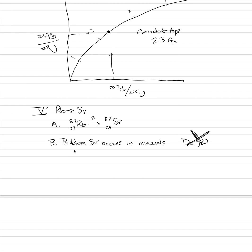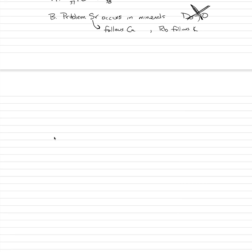Strontium follows calcium geochemically, so minerals with lots of calcium — feldspars, micas, amphiboles — already contain strontium. Similarly, rubidium follows potassium, which also occurs in many minerals. This means the initial daughter concentration is not zero, which complicates the standard geochronology equation.